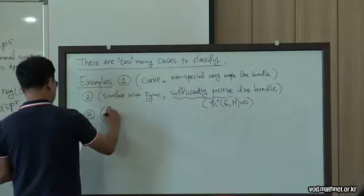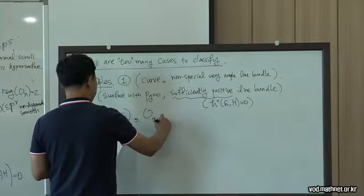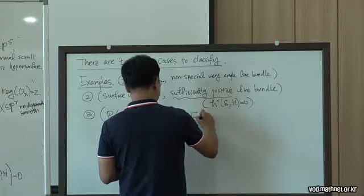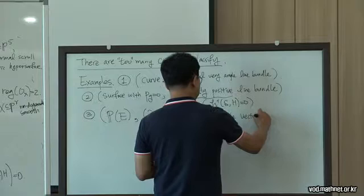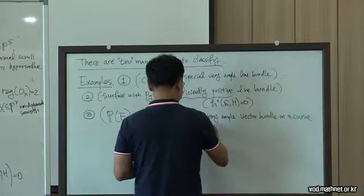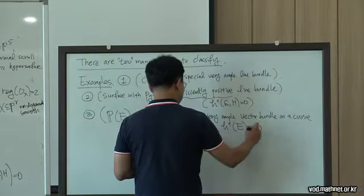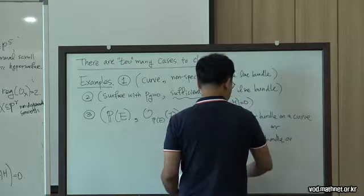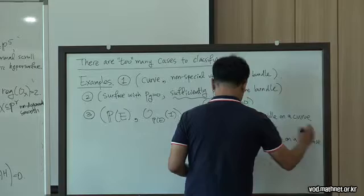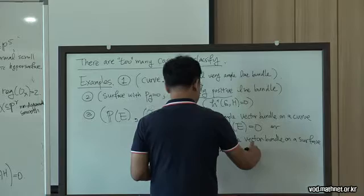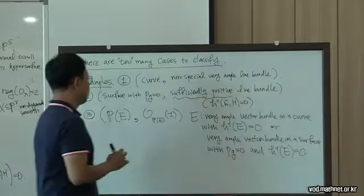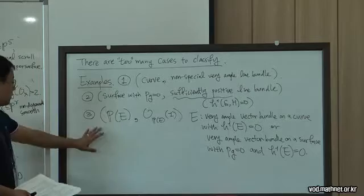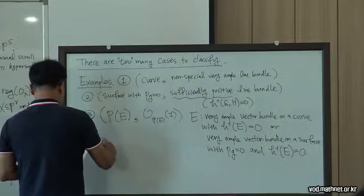The fourth example is a projective P-bundle with the tautological line bundle, where E is a very ample vector bundle on a curve with H^1 vanishing, or a very ample vector bundle on a surface with p_g equal to zero and H^1 also zero. This example also gives a 2-regular structure sheaf.